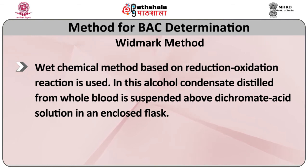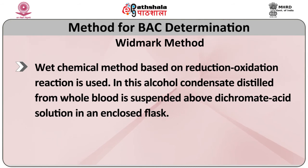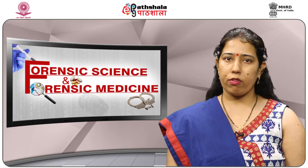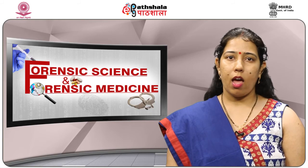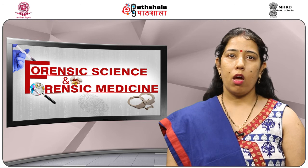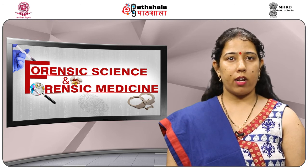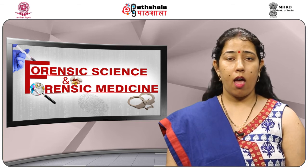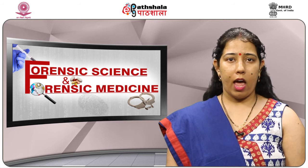For blood alcohol concentration determination, a wet chemical method based on oxidation-reduction reaction is used. Alcohol condensate distilled from whole blood is suspended above a dichromate acid solution in an enclosed flask. Based on the amount of alcohol present, the sodium dichromate solution is reduced, and this is measured. It is a simple and accurate method used by laboratories. This method, modified in 1950, is known as the modified Widmark method and is still used due to its simplicity and accuracy.